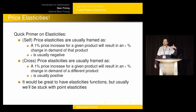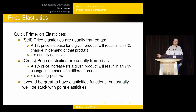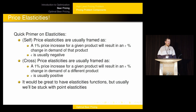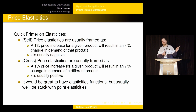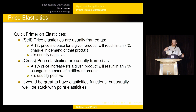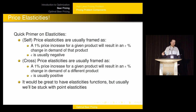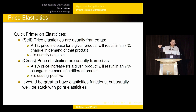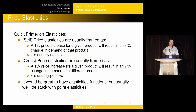Cross-price elasticity is: when I increase the price by 1% for one product, how much do I change demand in a different product? In the case of cross-elasticity, you usually expect epsilon to be positive — if I raise the price of one product, fewer people buy it, and more of them jump to competing products. A key point: it would be great if we had full elasticity functions, but typically it's very hard. We're stuck with point elasticity — at the current price-demand point, we can estimate what happens if we raise price by 1%, but if we raise it again later, that elasticity may be different. It's really hard to have enough data to model that.